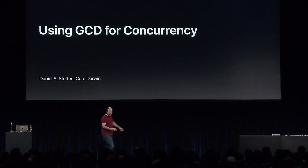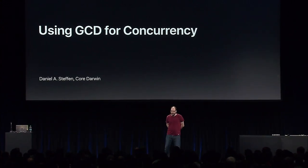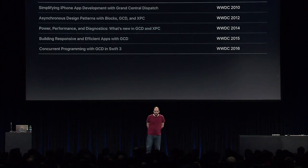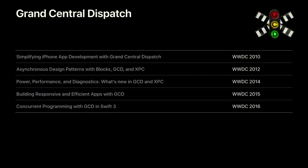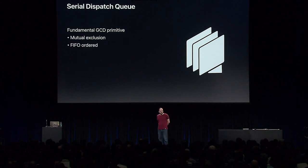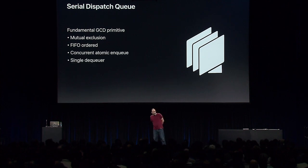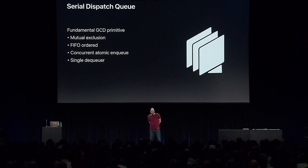We have a lot to cover today, so I won't go into too many details on the fundamentals of GCD. For those new to the technology, there are sessions from previous WWDC conferences covering GCD. We do need a few basic concepts today, starting with the serial dispatch queue — our fundamental synchronization primitive in GCD. It provides mutual exclusion and FIFO ordering. It has a concurrent atomic enqueue operation, so it's fine for multiple threads to enqueue operations simultaneously, as well as a single dequeue thread the system provides to execute asynchronous work items.